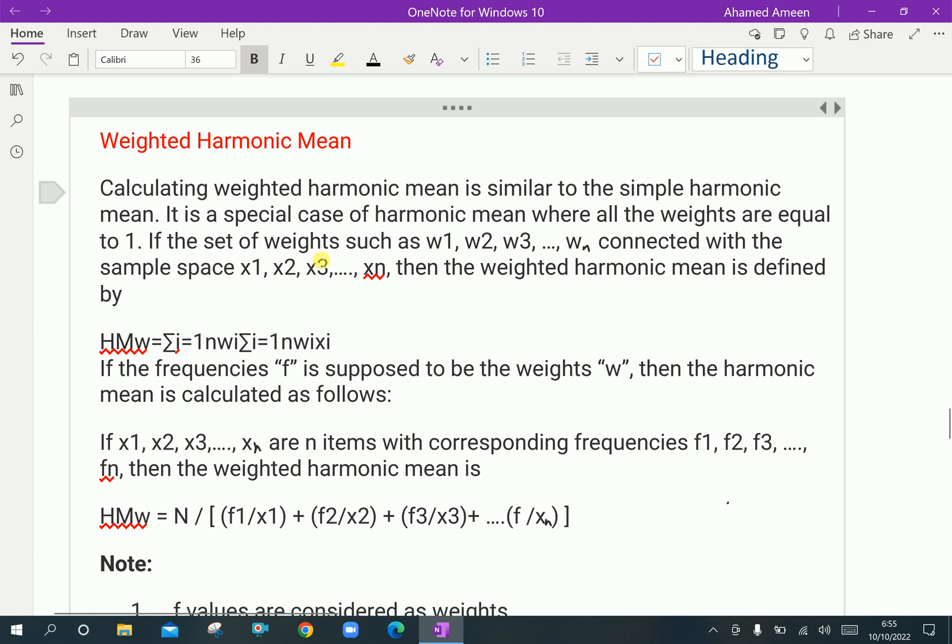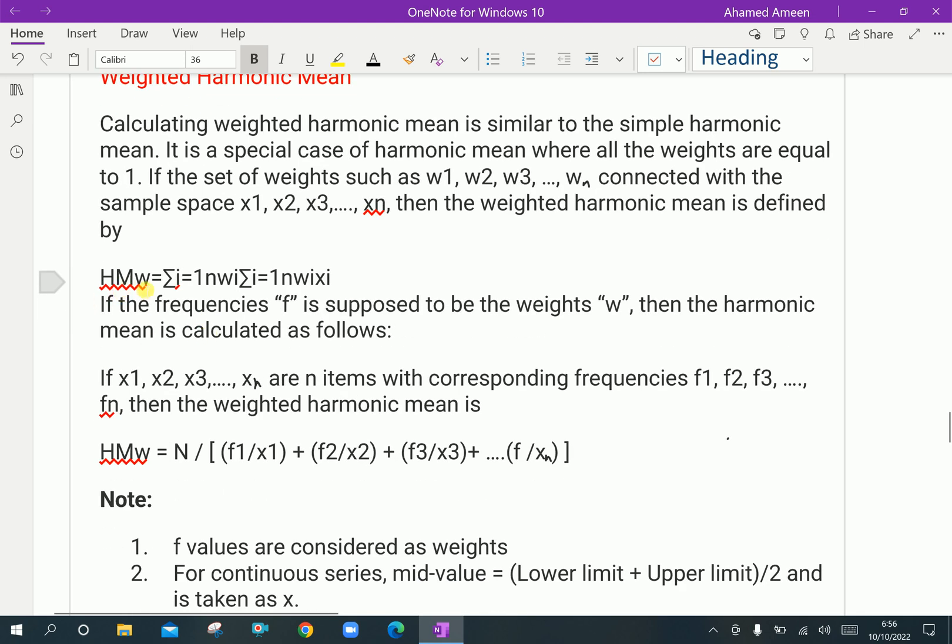If the set of weights such as W1, W2, W3 up to Wn connected with the sample space X1, X2, X3 up to Xn, then the Weighted Harmonic Mean is defined by that is Weighted Harmonic Mean is sigma i, that is N1, W1, sigma n i.